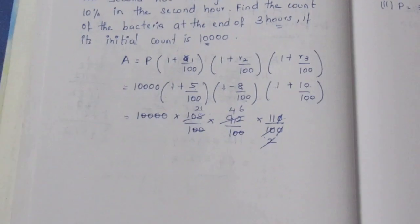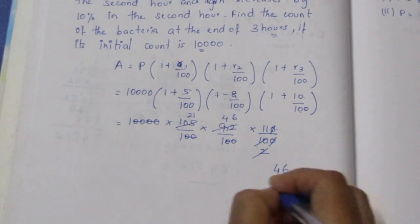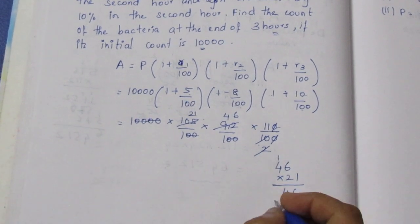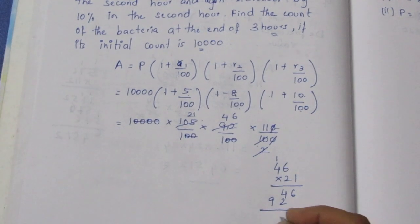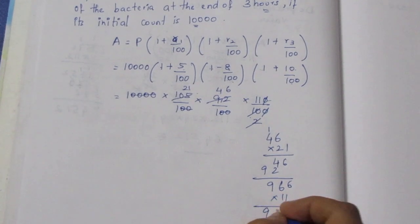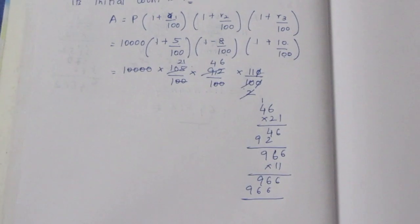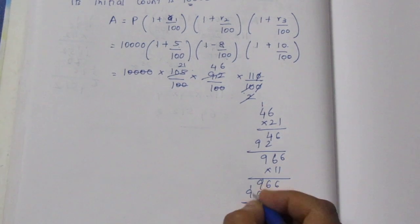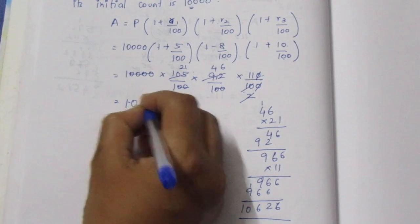Now we multiply the remaining numbers. 46 into 21: 6 twos are 12, 4 twos are 8 plus 1 is 9. Multiplying gives us 966. Then multiplying 11 by 11, combining all results gives us 10,626.